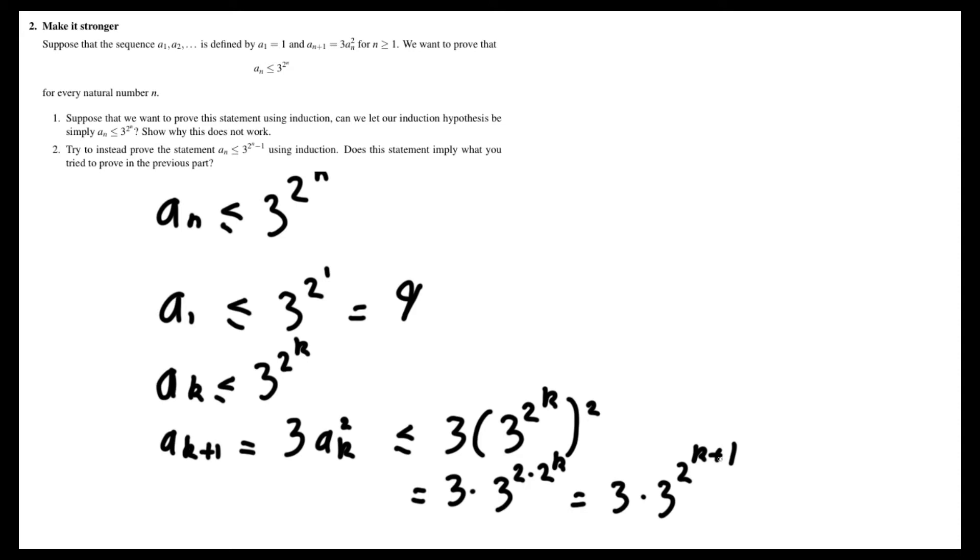Now this isn't exactly what you want. We want aₖ₊₁ is less than or equal to 3 to the 2 to the k plus 1, but we have this extra factor of 3 in the way. And because of the direction of the inequality, we can't just drop that.